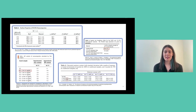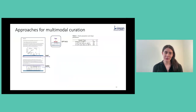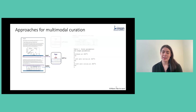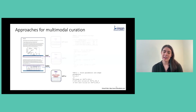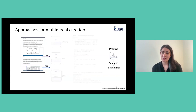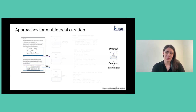We thought about how to represent this table information in a good way and came up with three different approaches. First, take the image of the table and provide it to a multimodal model such as GPT-4 Vision together with the table caption. Second, extract the text from the table and provide this to a language model together with the captions. Third, extract the information from the tables in a structured format such as CSV files. Our prompt includes the selected input modality together with a couple of examples and specific instructions about how to fill in the JSON template we provide.